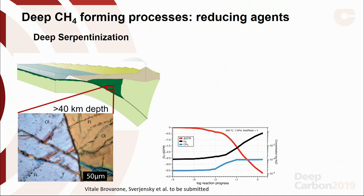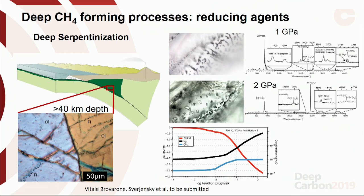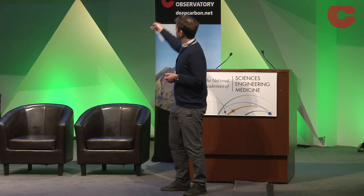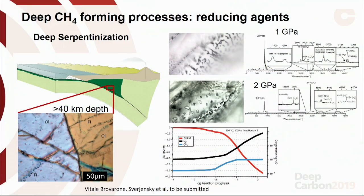We see exactly what we need: the fO₂ decreases during water-rock interaction, and a lot of hydrogen and methane — if some carbon is present — can form. We can couple this modeling with natural samples. These are examples from tectonic units that went down to 1 GPa and 2 GPa — fluid inclusions. What we find is a lot of methane and hydrogen, but they are not alone. There is also ethane, H₂S, and ammonia — which has never been found in geological fluids, especially at depth. Hydrogen, methane, H₂S, ammonia — this is almost everything deep life needs to exist and survive, and everything is in these deep fluid inclusions.